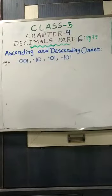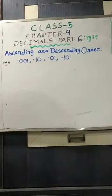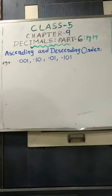Now, students, we will continue with our chapter number 9, decimals, part number 6, page number 79. All of you open your book to page number 79. Today, we will learn ascending and descending order of decimal numbers.